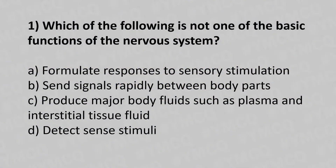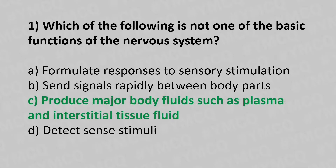Question 1: Which of the following is NOT one of the basic functions of the Central Nervous System? Option A: formulate response to the sensory stimulation. Option B: send signals rapidly between body parts. Option C: produce major body fluids such as plasma and interstitial tissue fluid. Option D: detect sense stimuli. The answer is Option C — produce major body fluids such as plasma and interstitial tissue fluid.